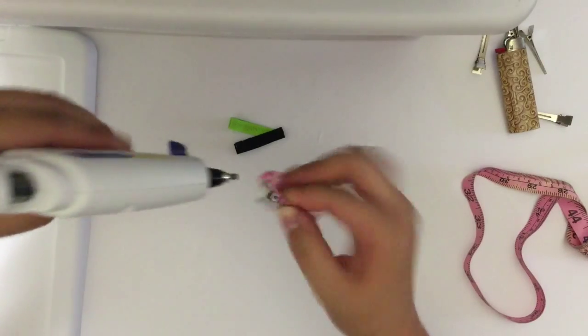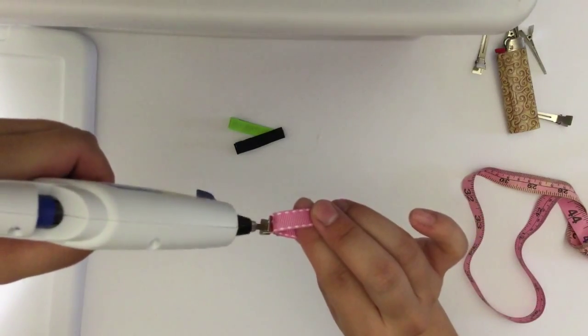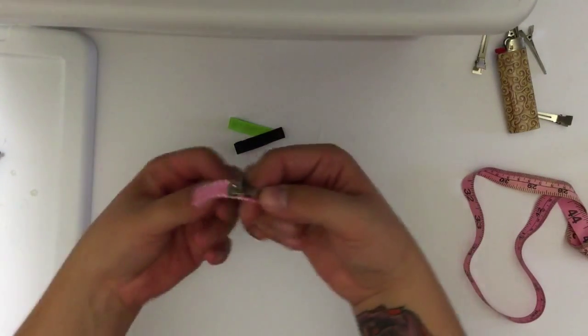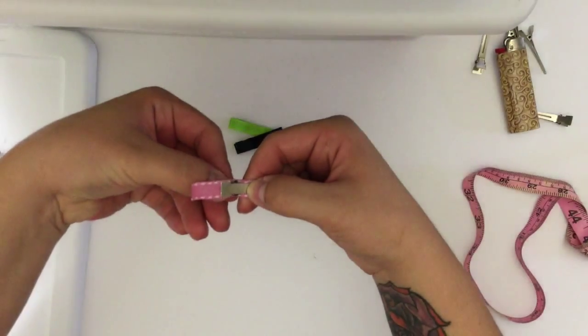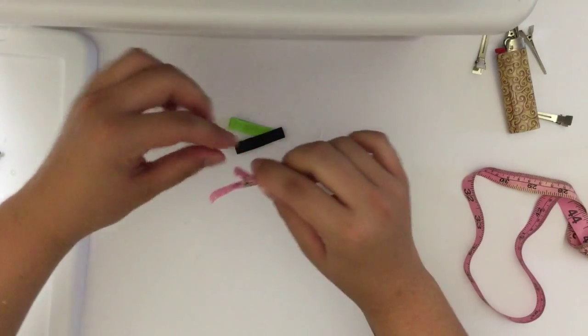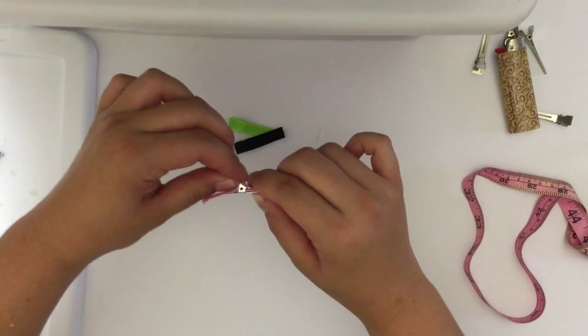So one dot there and then one dot on the opposite side. You'll then use your thumb to push your ribbon inside and push down. Again, you don't want to put too much glue, otherwise it will spill into the clip and it won't be able to open.